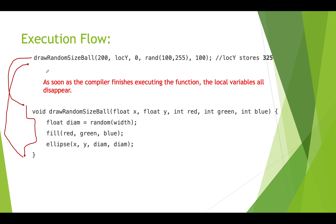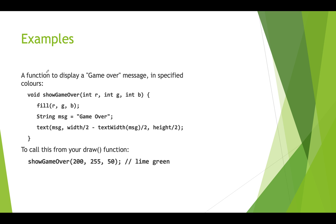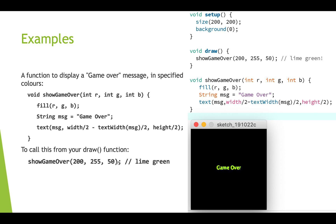Here's a quick example: a function written to display a game over message, with parameters r, g, b for the text color. It's not returning anything, but takes red, green, blue int values. Inside, we use r, g, b to set the fill color, create the string message, and use text() to display it in the middle of the screen. To call it from your draw function, you pass in three ints — for example to generate a lime green message.